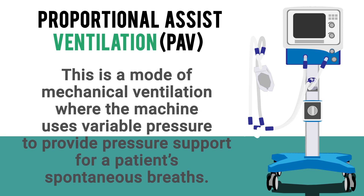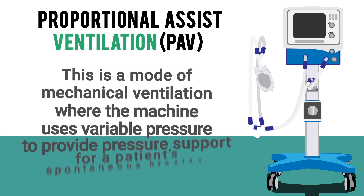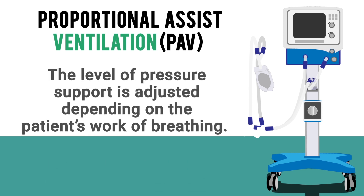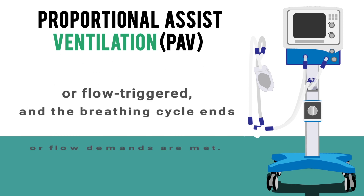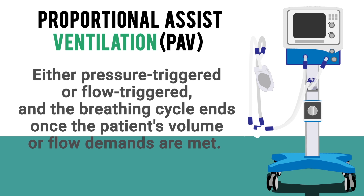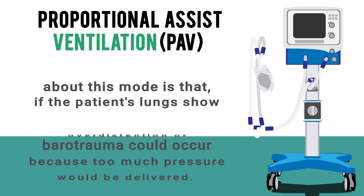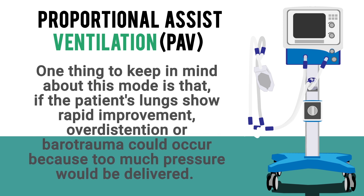PAV, or Proportional Assist Ventilation, is a mode where the machine uses variable pressure to provide pressure support for the patient's spontaneous breaths. The level of pressure support is adjusted depending on the patient's work of breathing. PAV can be pressure-triggered or flow-triggered, and the breathing cycle ends once the patient's volume or flow demands are met. One caution: if the patient's lungs show rapid improvement, overdistention or barotrauma could occur because too much pressure would be delivered.